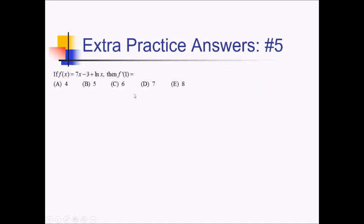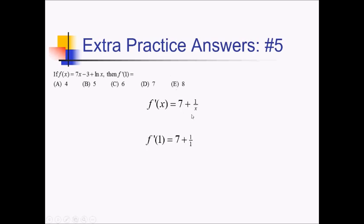For this problem, we want the derivative of this function at x equals 1. The general derivative: derivative of 7x is just 7, derivative of negative 3 is zero, and derivative of ln of x is 1 over x. Plugging 1 in gives us 7 plus 1 over 1 — that's 7 plus 1, which gives us 8. Choice E.